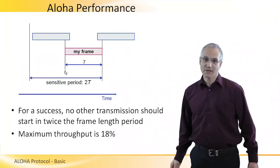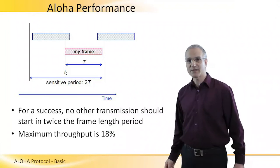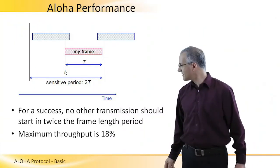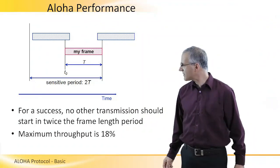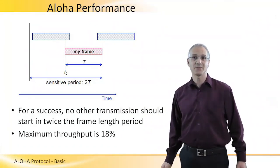Using this observation, we can calculate the throughput and see that the maximum achievable throughput in an ALOHA protocol is only 18% of the capacity.